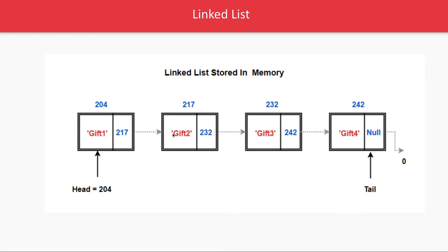Second node of this has a reference of the third node. You see 217 is a memory reference of second node, 232 which is a memory reference of third node, 242 which is a memory reference of fourth node and fourth node is not having memory reference of anything. That is null means there is nothing beyond it and head is pointing to 204.